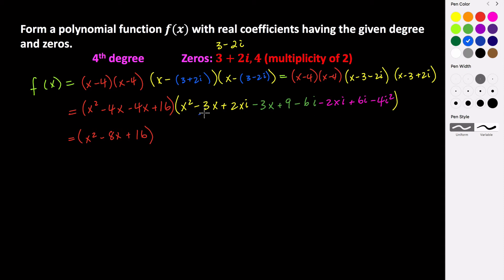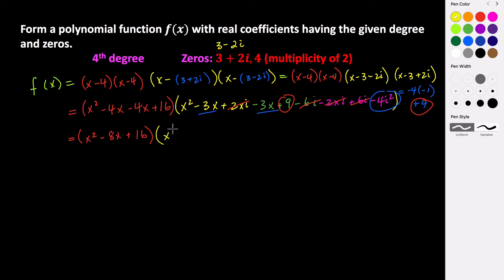Now combining like terms: negative 3x and negative 3x gives minus 6x. The positive 2xi and negative 2xi cancel. The negative 6i and positive 6i cancel. And negative 4i squared equals negative 4 times negative 1, which is positive 4. So positive 9 and positive 4 combine to give us x squared minus 6x plus 13.